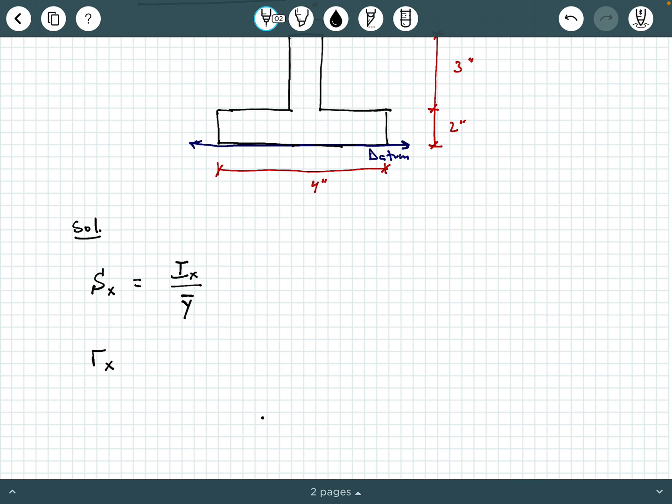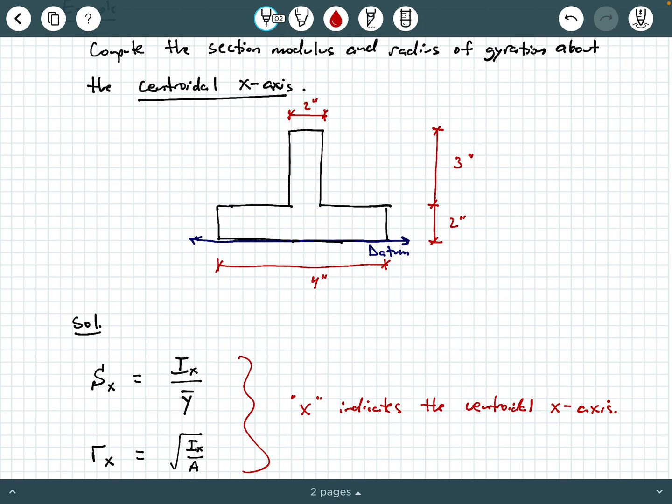And then, the radius of gyration about the x-axis is going to be the square root of i sub x over A. And again, we want to make maybe a note to ourselves that this x right here, x indicates the centroidal x-axis. So the centroidal x-axis is going to be somewhere at some height here that we don't really know yet. And it's going to be located at some height y bar above our reference axis, or our datum is what we sometimes call it.